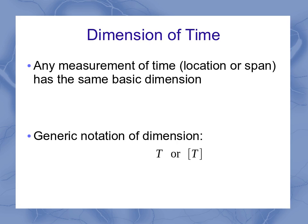And our generic notation for the dimension of time is a capital T, or some textbooks put the square parentheses around there. Now let's take a look at this location and span and see a little bit more about what we mean by these things.